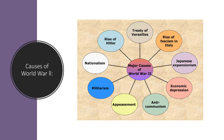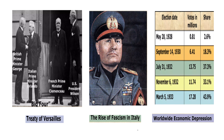Some of the causes of World War II include the rise of Hitler, the Treaty of Versailles, the rise of fascism in Italy, Japanese expansionism, appeasement, nationalism, and anti-communism. The harsh terms imposed on Germany after World War I through the Treaty of Versailles in 1919 led to economic hardships, territorial losses, and a sense of humiliation among the German population. This created a fertile ground for the rise of Adolf Hitler and the Nazi Party, who exploited these grievances and sought to overturn the treaty's terms.